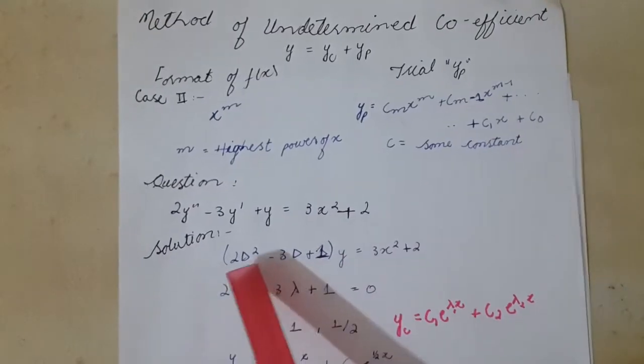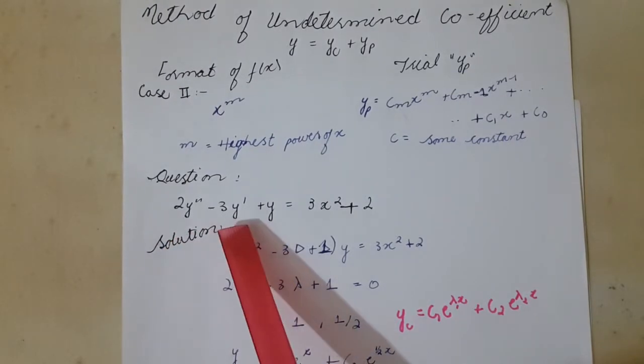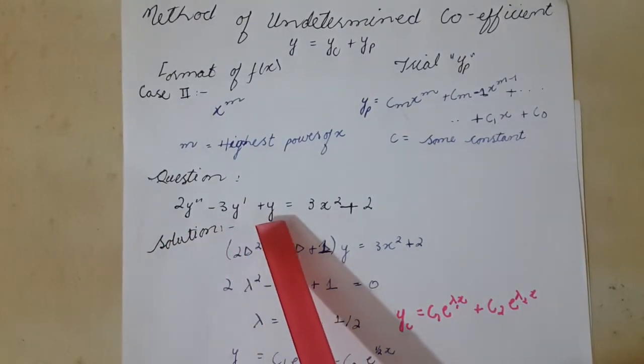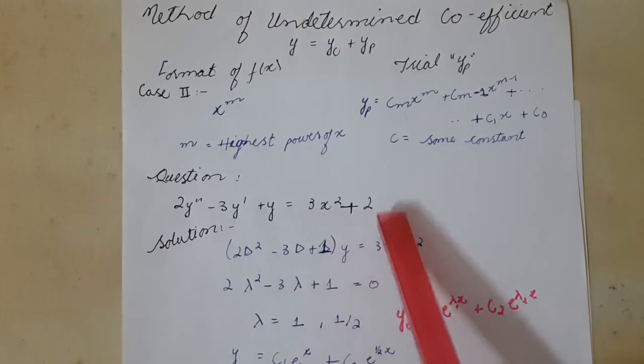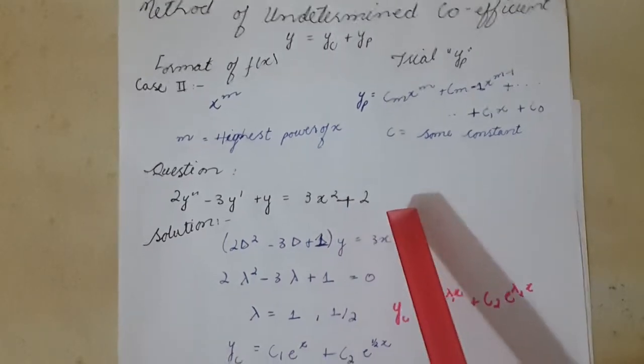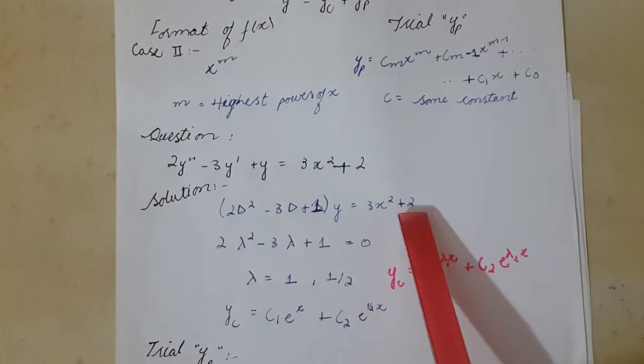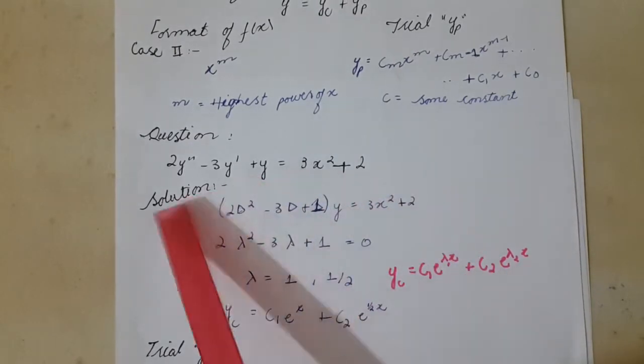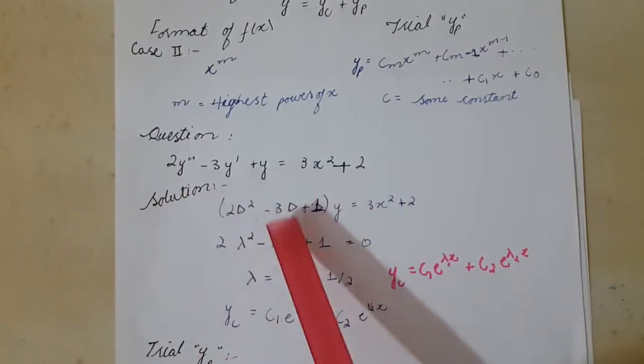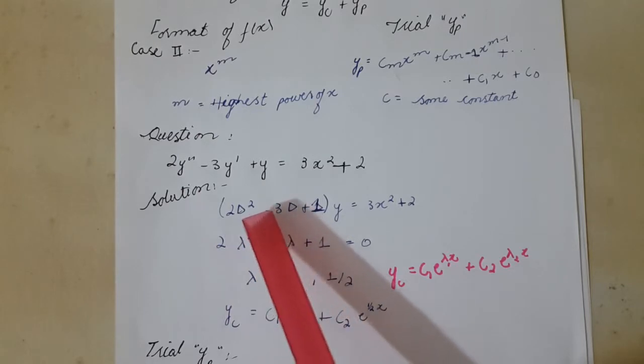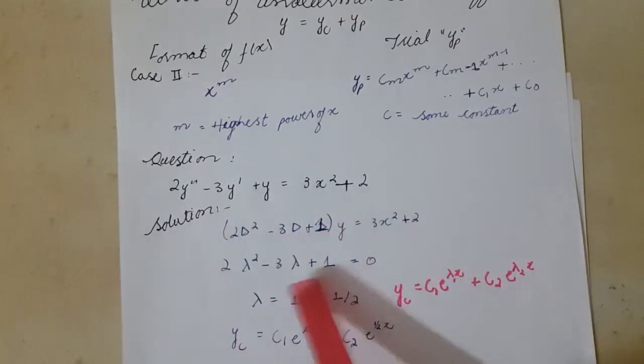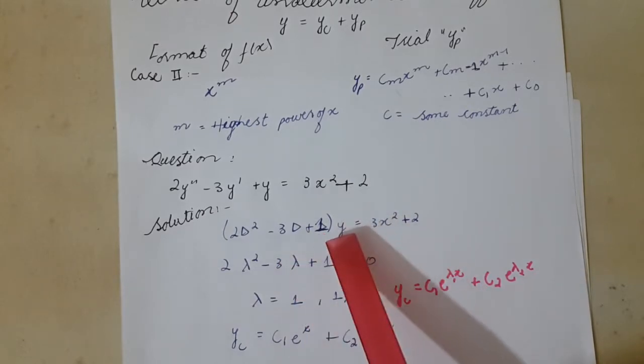We have question: 2y'' - 3y' + y = 3x² + 2. We can transform our equation. We can write y double derivative as 2d² and in this equation I take common y here.